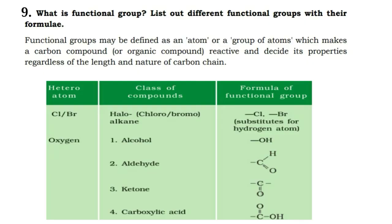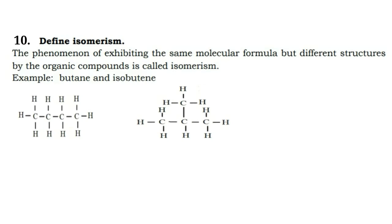Next question: what is a functional group? List different functional groups with their formulas. A functional group may be defined as an atom or group of atoms which makes a carbon compound reactive and determines its properties regardless of the length and nature of the carbon chain. Important functional groups include: haloalkanes (–Cl or –Br), alcohol group (–OH), aldehyde group (–CHO), ketone (C=O), and carboxylic acid (–COOH).